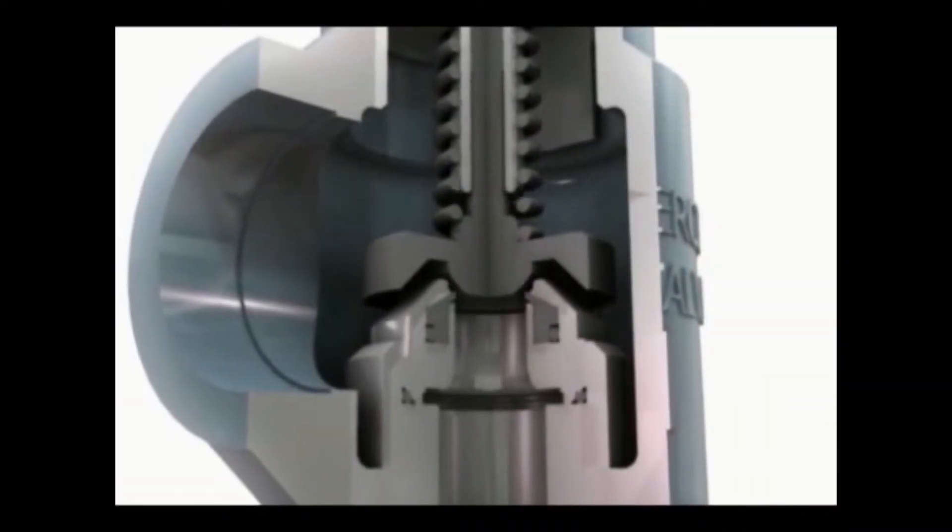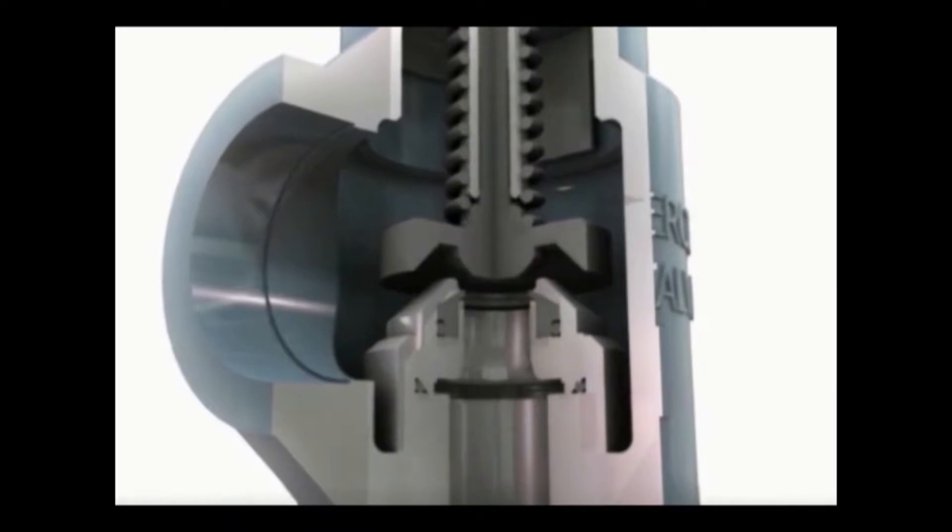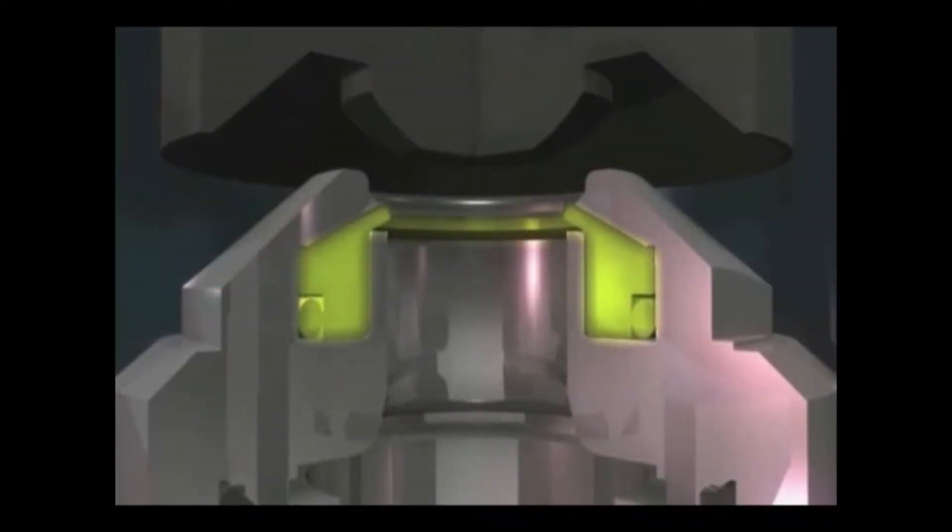The lip seal seat also does not absorb the brute impact of the disc closing. To avoid the impact, the seat flexes down as the disc closes, allowing the metal nozzle to stop the disc movement.